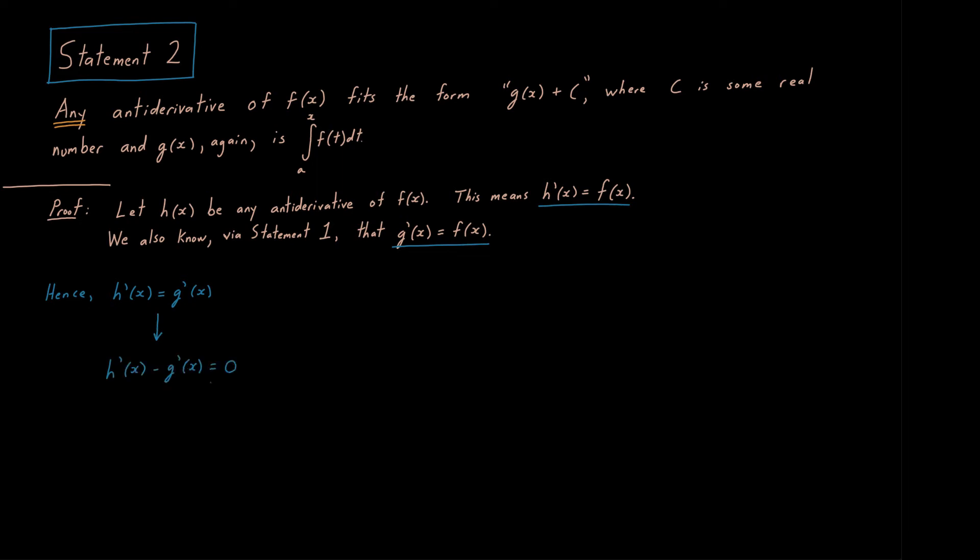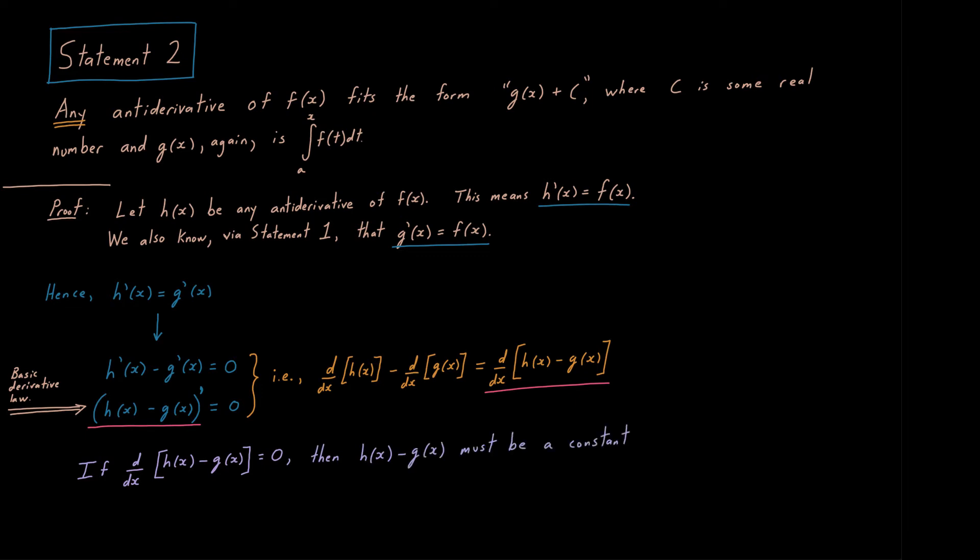Therefore, h prime minus g prime needs to be 0, which is the same thing as saying h minus g, the entire derivative of that, is 0, which follows from basic derivative properties that we learned in first semester calculus. It may help to put this in differential notation. The derivative with respect to x of h minus the derivative with respect to x of g is the same thing as saying the derivative with respect to x of h minus g. That's the same thing as what's underlined on the left in pink. And as we know, if the derivative of something is 0, then that something, in this case h minus g, must be a constant. Has to be a constant.